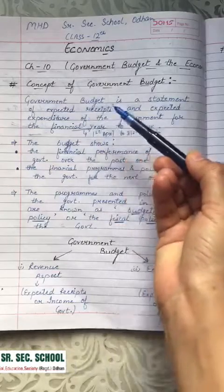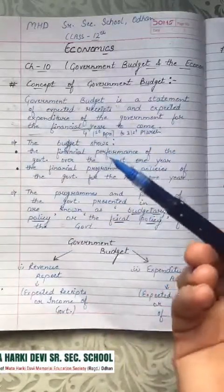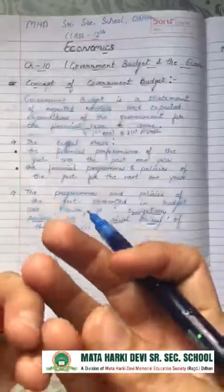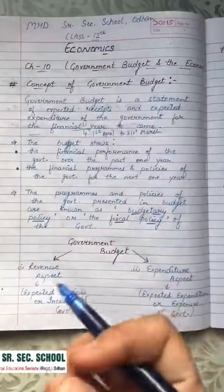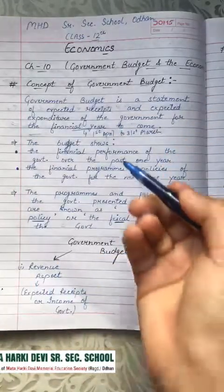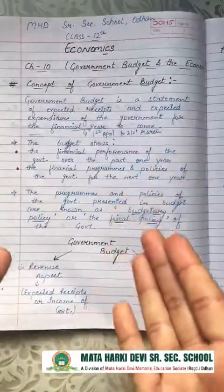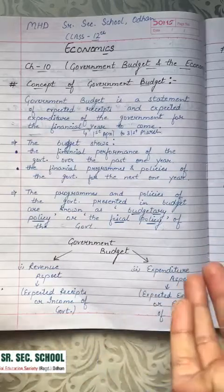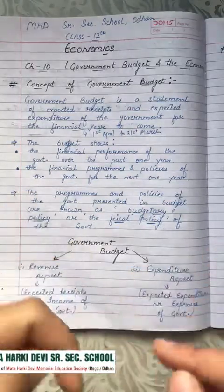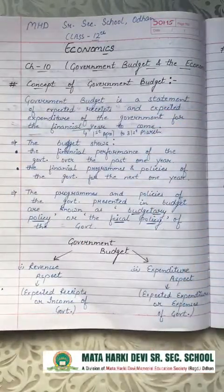So what is government budget? Government budget is simply a statement of the expected receipts and expected expenditure of the government for the financial year to come. It is a list in which we have expected or estimated receipts — what the income sources are — and expected expenditure, meaning the amount of money the government plans to spend for the coming year.